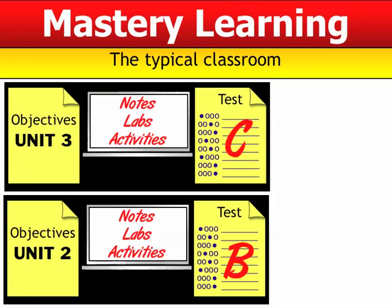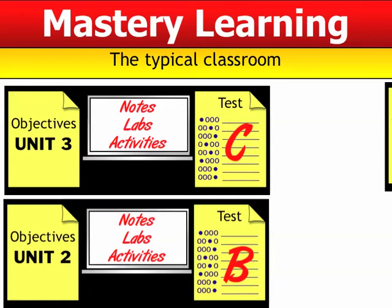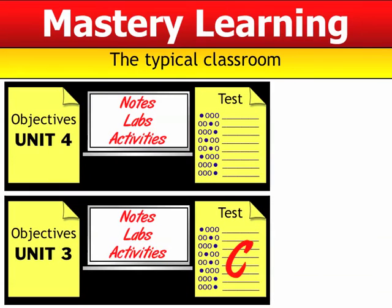And this process continues in the typical classroom: objectives, notes, labs, tests. So now I've got my grades — a C, a B, and a D — and there's nothing really I can do about them. And so the process continues on.